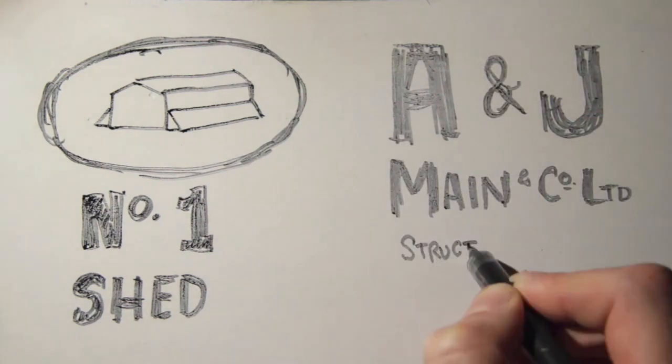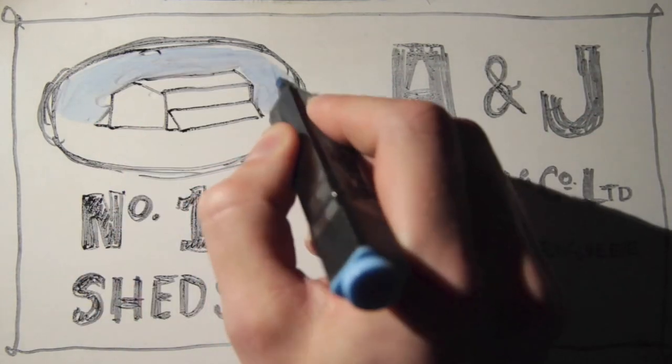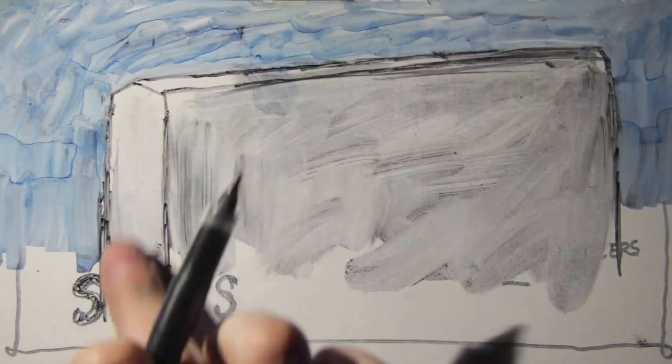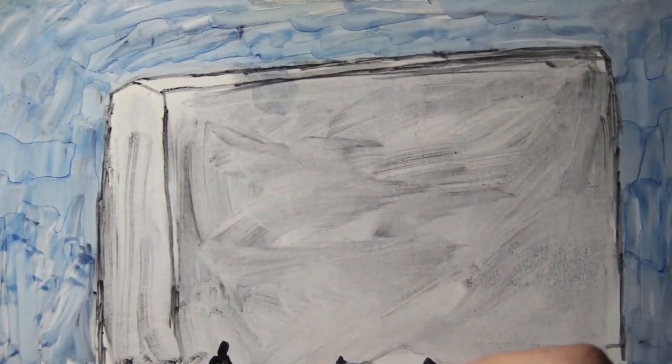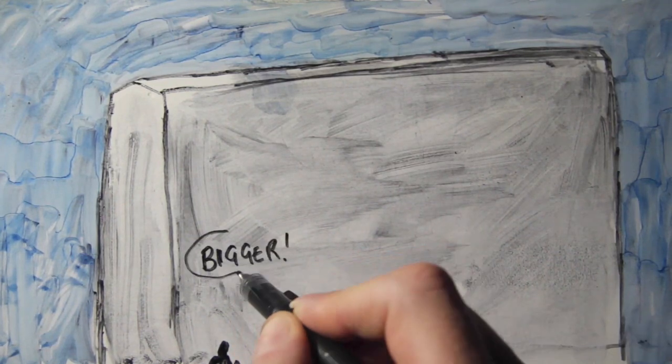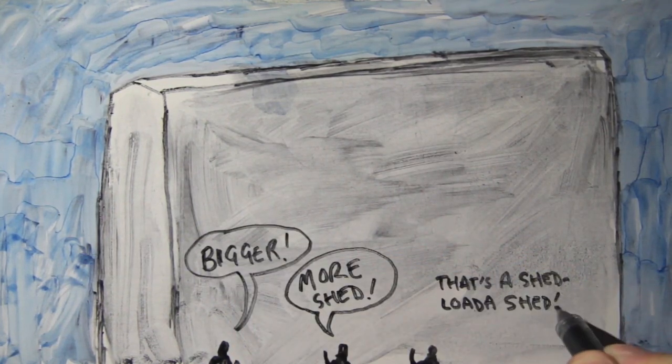Number one shed was built by my own brothers in 1916, and then later on it was lengthened and enlarged to allow for the ships as they are now. And there's also talk about extending it again.